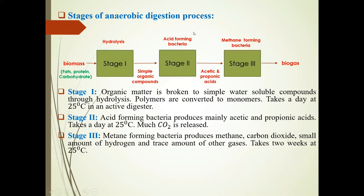The stages of the anaerobic digestion process are shown: Stage 1, Stage 2, and Stage 3. In Stage 1, biomass containing fats, proteins, and carbohydrates is fed in. This organic matter is broken down into simple water-soluble compounds through the hydrolysis process. Polymers are converted to monomers — long-chain compounds are converted to small basic molecules. This process takes one day at 25 degrees Celsius in active digestion.